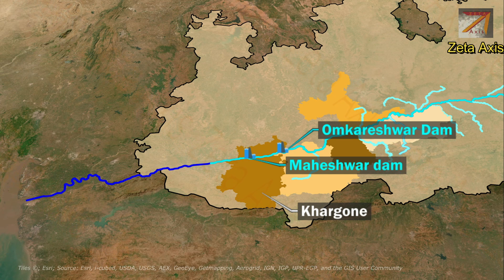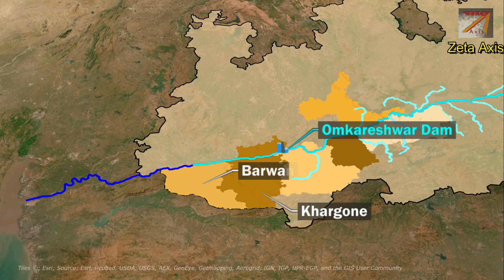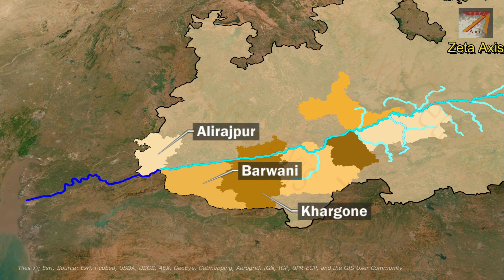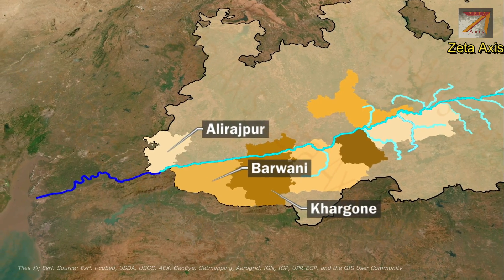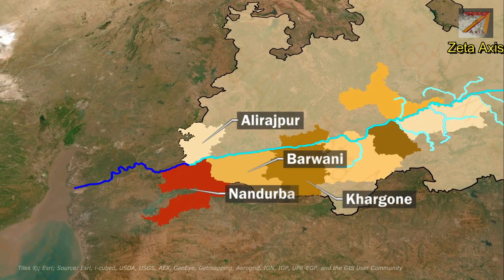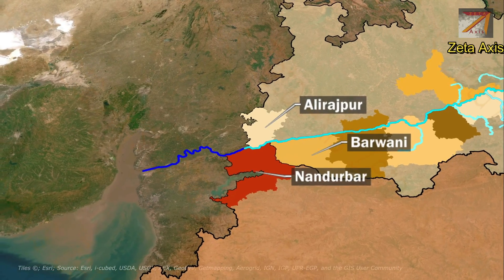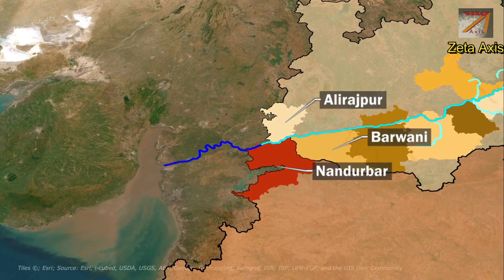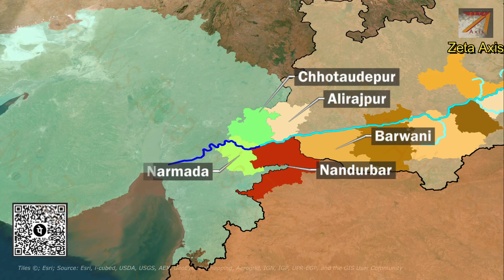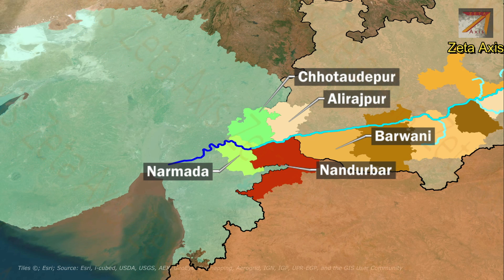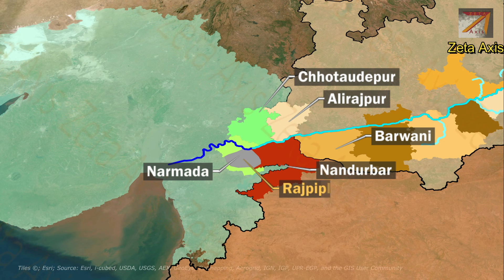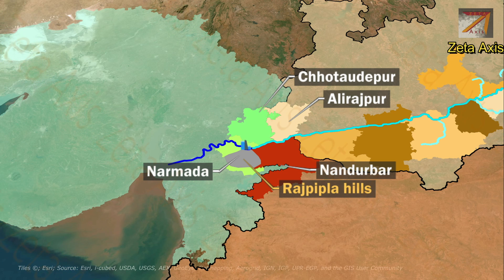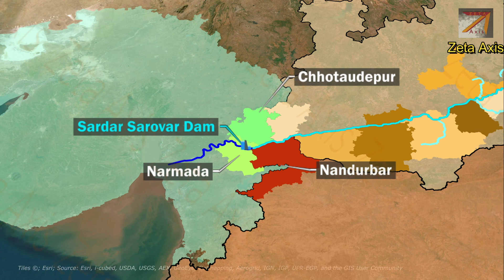From Khargone, the Narmada flows into Barwani district and then reaches Alirajpur district of Madhya Pradesh. In Alirajpur district, the Narmada forms the boundary between Alirajpur district of Madhya Pradesh and Nandurbar district of Maharashtra for 39 km. Later, it forms the boundary between Chhota Udaipur district and Narmada district of Gujarat on the right bank and Nandurbar district of Maharashtra on the left bank. The river then flows through the Rajpipla hills, and in Narmada district of Gujarat, Sardar Sarovar Dam is built near Kevadiya.